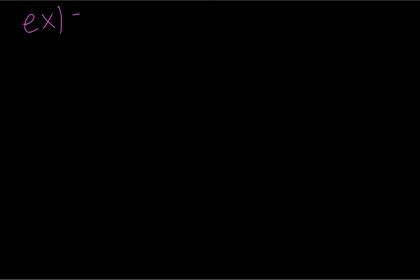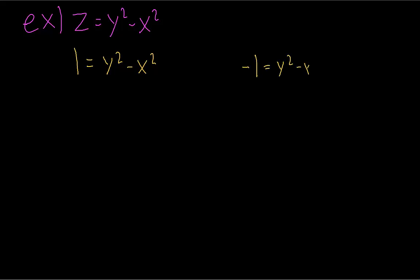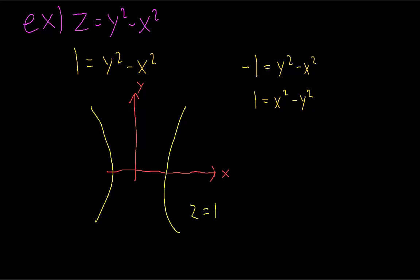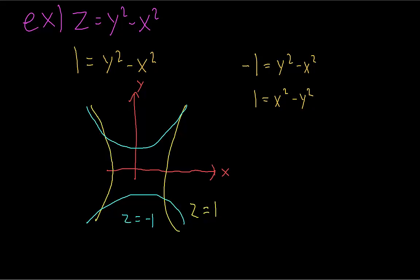Our last example is going to be the hardest one to visualize. First, let's take some cross-sections perpendicular to the z-axis. Notice that if we take z equals 1 and z equals negative 1, these cross-sections are different shapes. They are both hyperbolas, but because the x and y switch orders, the hyperbolas are pointing in different directions. For positive values of z, the cross-sections look like this, and for negative values of z, the hyperbolas are on the top and bottom. The cross-sections perpendicular to the z-axis change depending on whether the z-value is positive or negative.